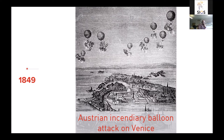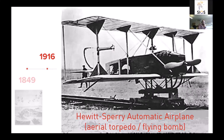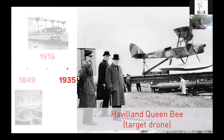The idea of drones was developed more seriously in World War One, when the British developed an automatic airplane called the aerial torpedo or flying bomb — basically a remotely piloted aircraft with a massive bomb on board, which today we would call a cruise missile. Between the World Wars, remotely controlled airplanes were further developed, producing the Queen Bee, pictured here with Churchill in the front.